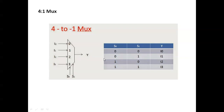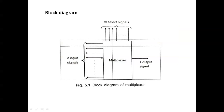The basic block diagram of a multiplexer has n select lines and m input signals, with only one output. Many inputs and one output — that is called a multiplexer. It transmits a maximum large number of signals over a single line.